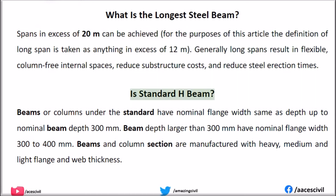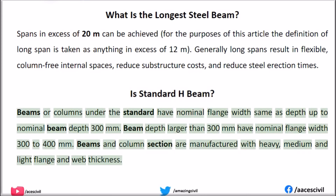Is there a standard for H-beams? Beams or columns under the standard have nominal flange width the same as depth up to a nominal beam depth of 300 mm. Beam depth larger than 300 mm have nominal flange width of 300 to 400 mm. Beams and column sections are manufactured with heavy, medium, and light flange and web thickness.